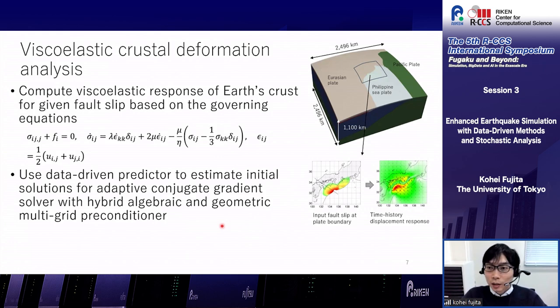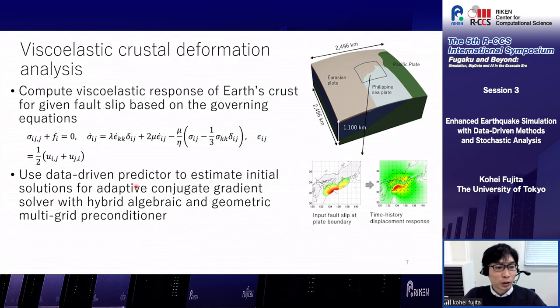We target computation of the viscoelastic response of the Earth's crust for a given fault slip, based on the governing equations shown. The time history response for the input fault at a plate boundary is computed, and in this solver we use a data-driven predictor to estimate the initial solutions for the adaptive conjugate gradient solver with a hybrid algebraic and geometric multigrid preconditioner.